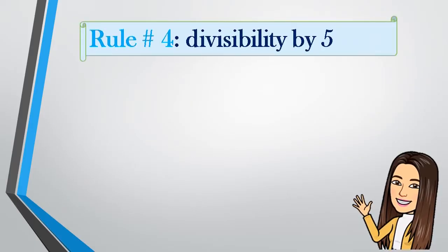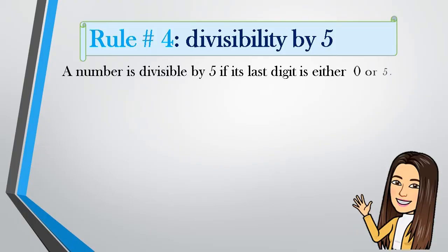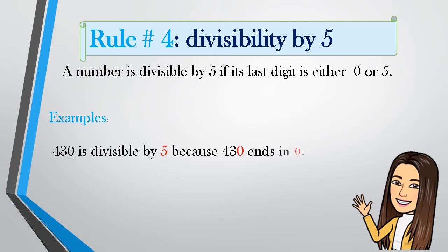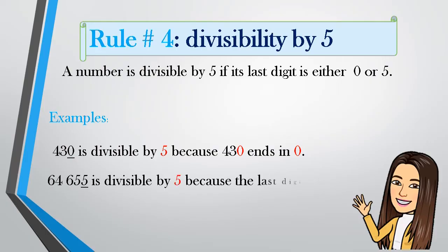Rule number 4: Divisibility by 5. A number is divisible by 5 if its last digit is either 0 or 5. Example: 430 is divisible by 5 because 430 ends in 0. Another example: 64,655 is divisible by 5 because the last digit is 5.